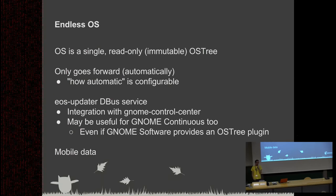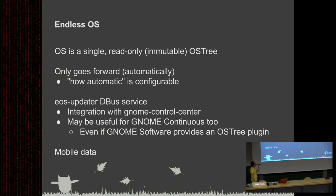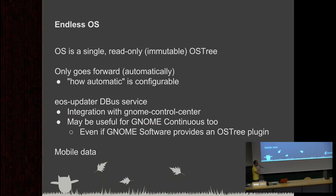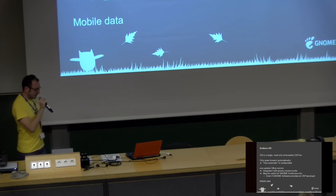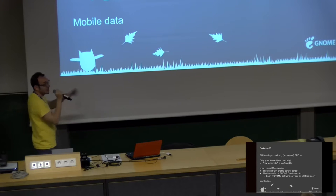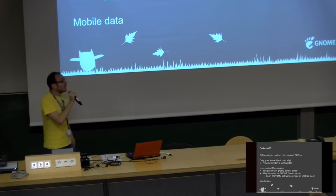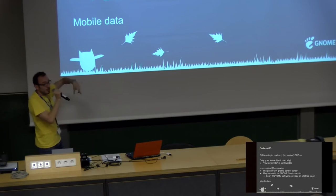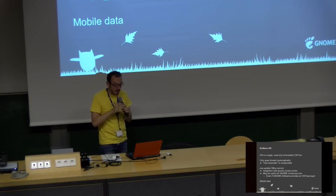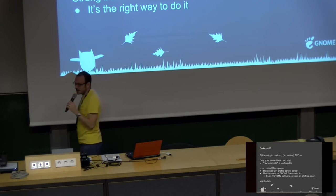How automatic this update operation is, is configurable, and we have a little process that manages all of this called EOS updater — you can find it on our GitHub. It may be interesting to have something like EOS updater in GNOME, basically a daemon that talks to the OSTree daemon and offers a D-Bus interface for things like control center or GNOME software to use. It also disables automatic downloading when it detects you're on a metered connection or mobile data plan, because we don't want people paying hundreds of dollars downloading gigabytes.